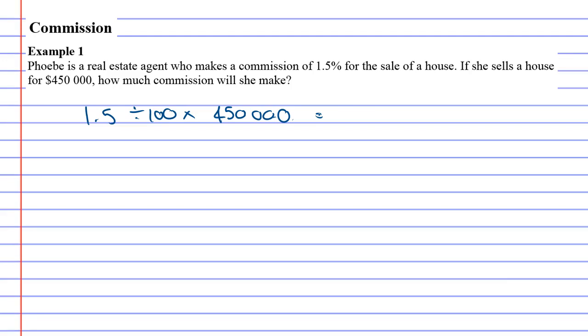So what do we get? 1.5 divided by 100 times $450,000.